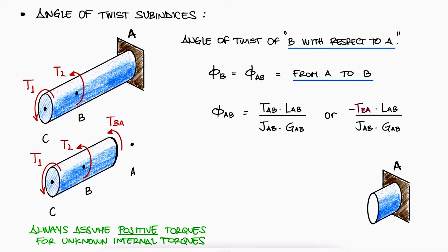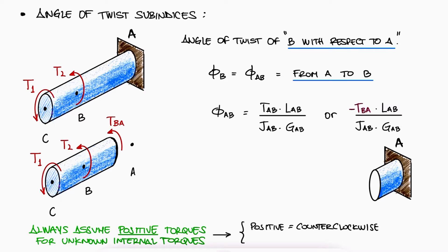If when solving for the number value of the internal torque we get a positive value, we have indeed found a counterclockwise internal torque. If the number value turns out to be negative, we know that the orientation should have been clockwise, and that the torque is indeed a negative torque.